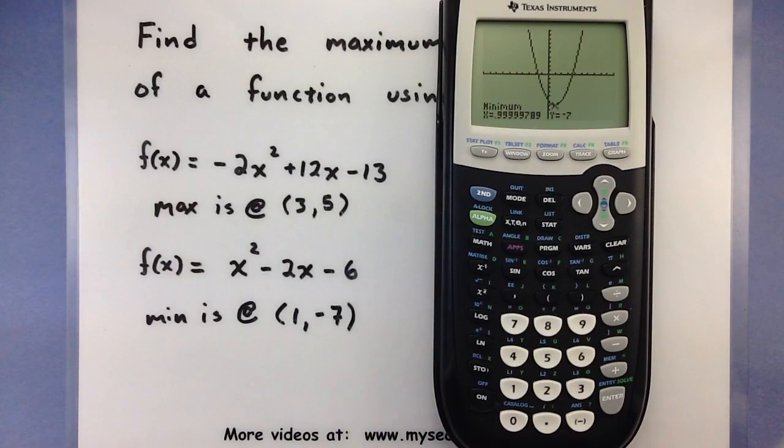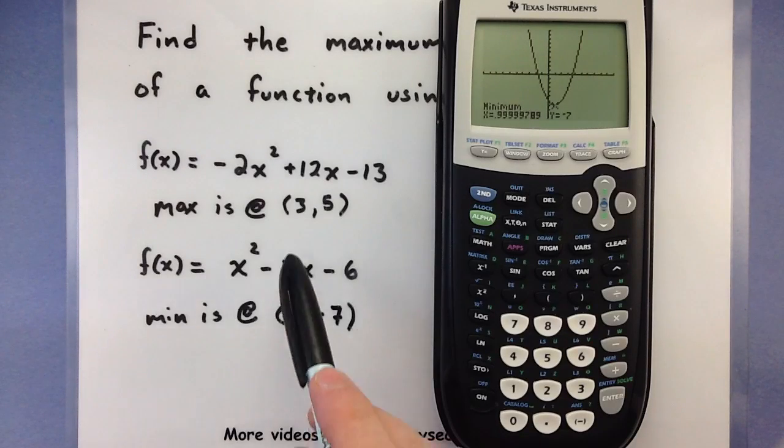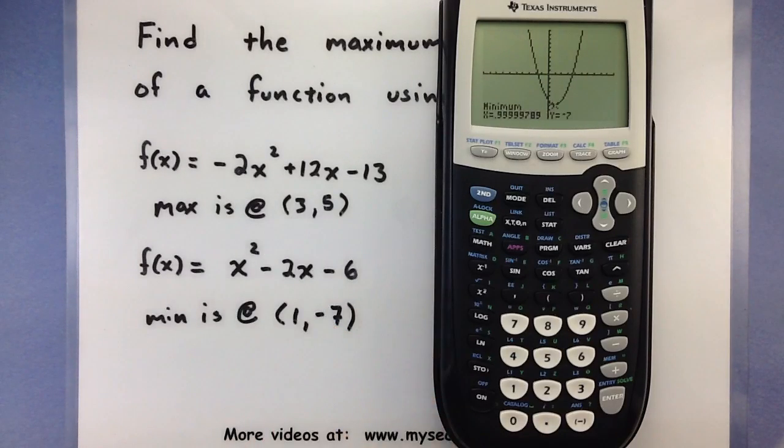Now if you do some work on these two functions and actually use the formula to find the maximum, you will find that the x is exactly at 3 for this maximum and the x is exactly at 1 for this minimum.